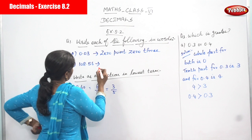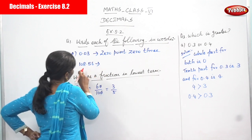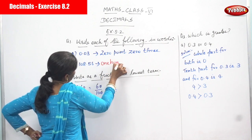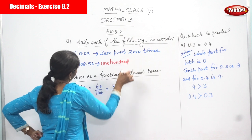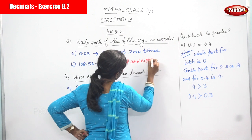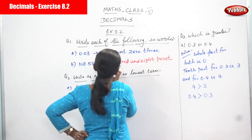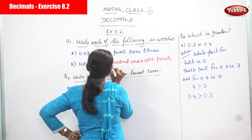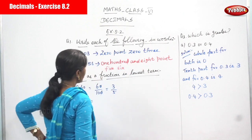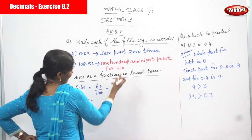Next we have 108.56. That is 108.56 — one hundred and eight point five six. So 108.56 is written as one hundred and eight point five six.